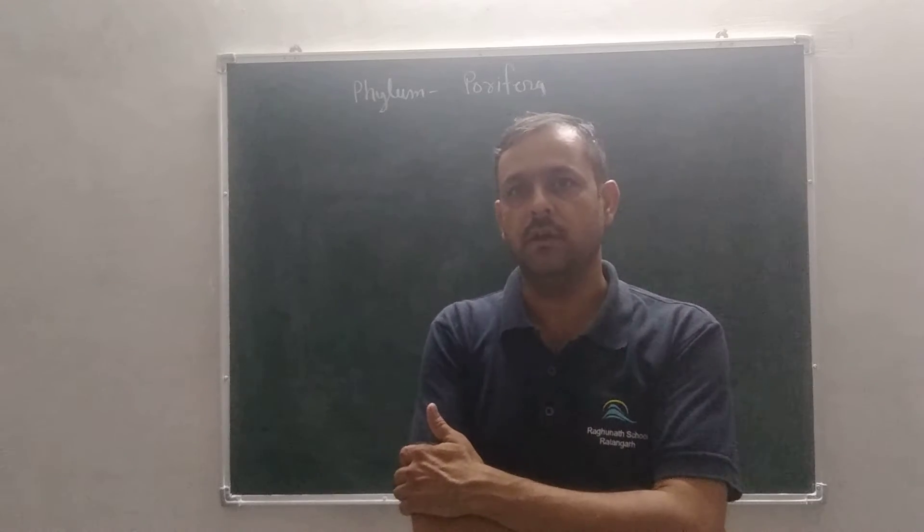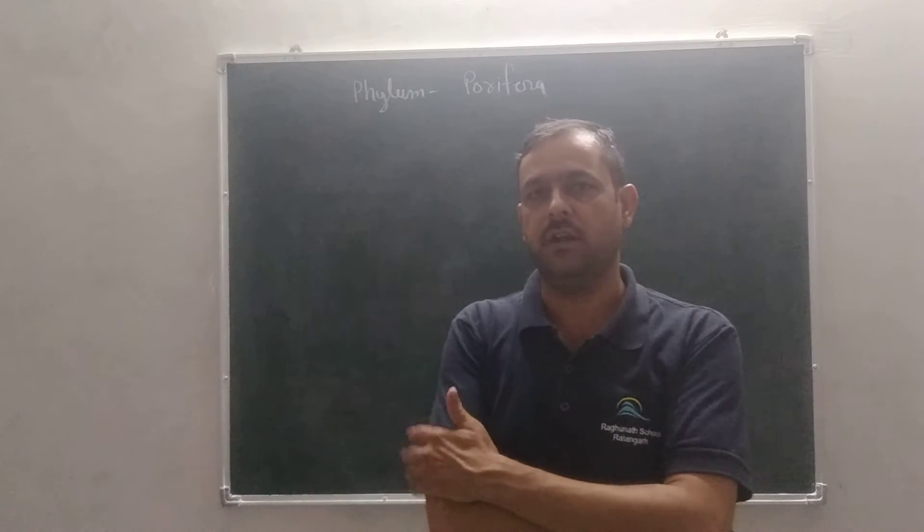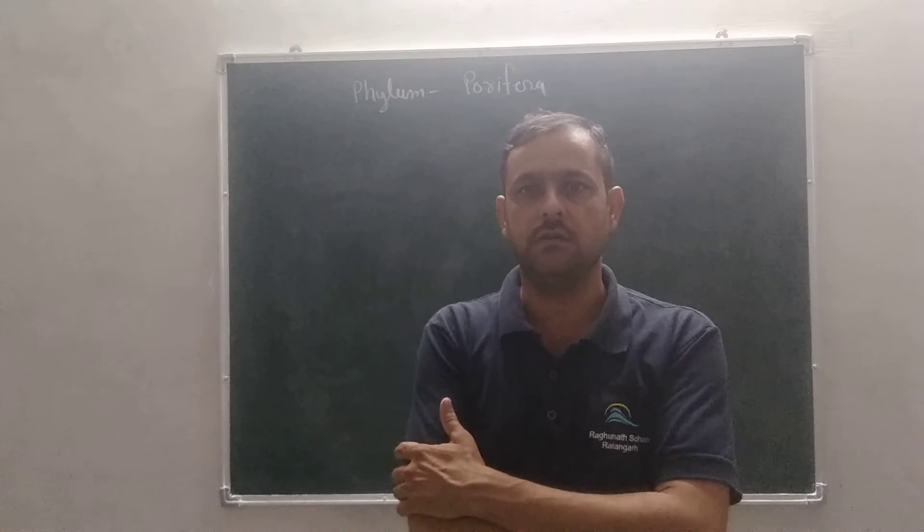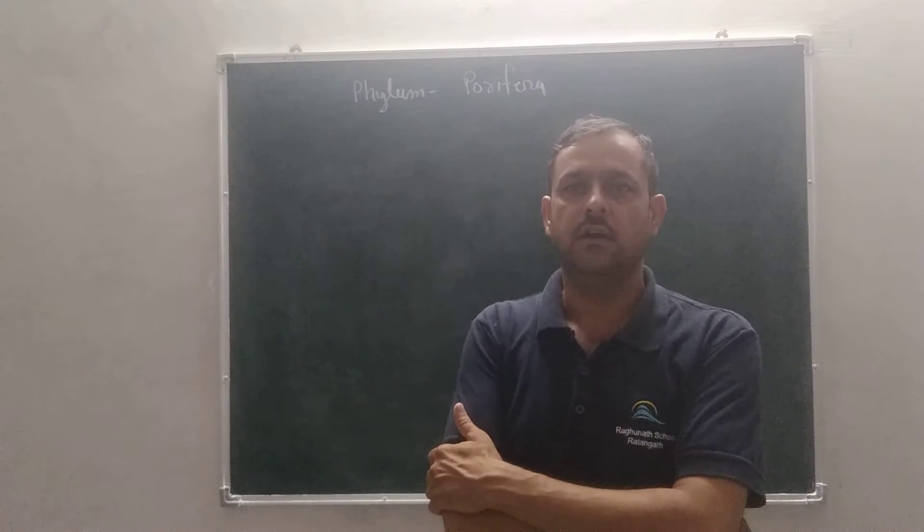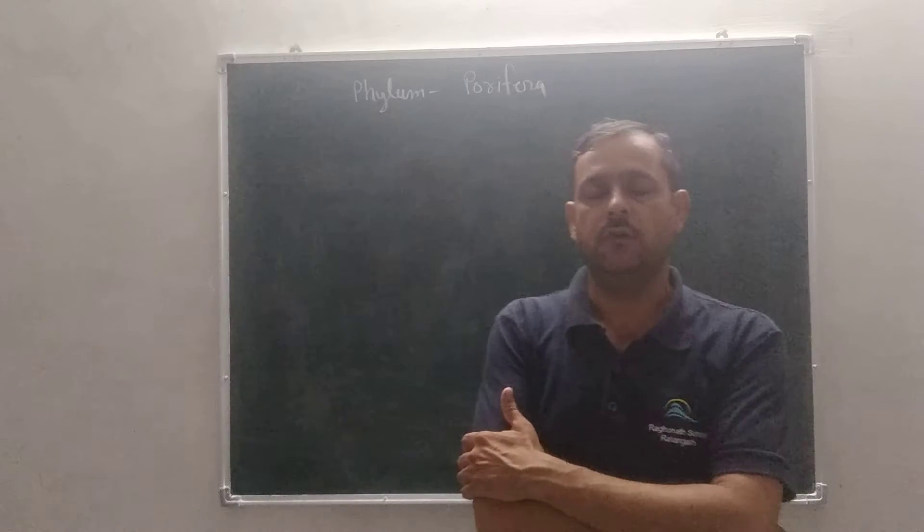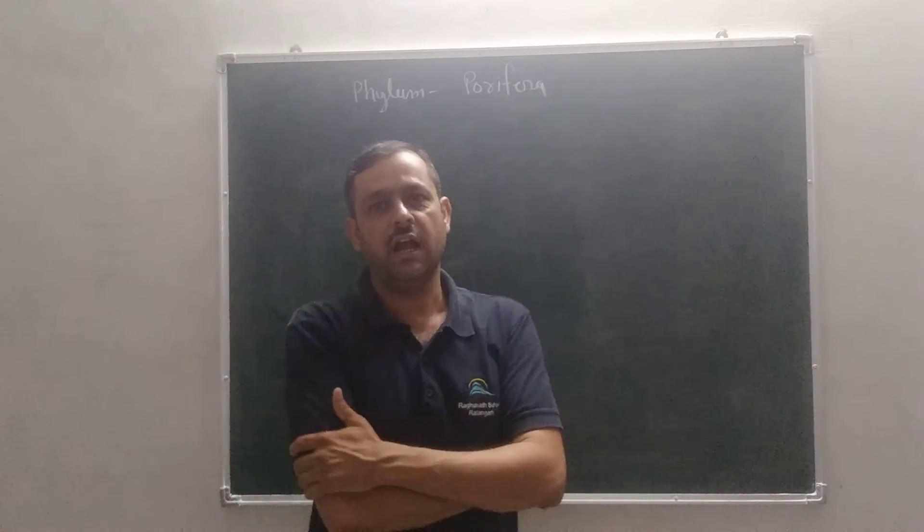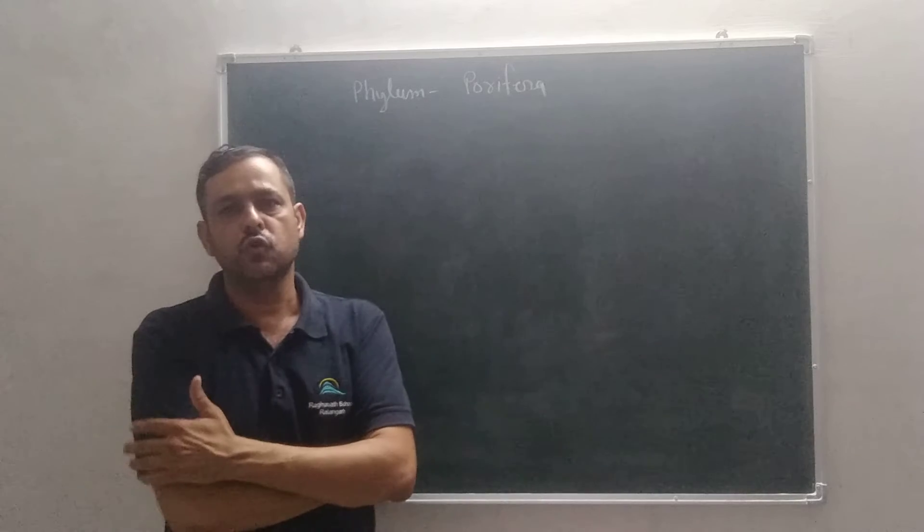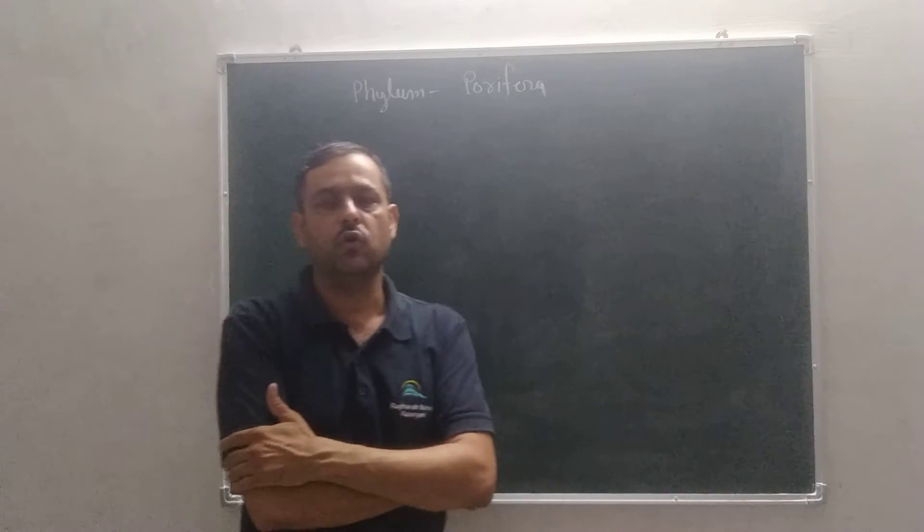In animal kingdom, we study this chapter in three parts. First, the basis of classification which we studied earlier in our first video. Now today, we are studying Chordata and Non-Chordata. The animals are divided into two parts: Non-Chordata and Chordata.